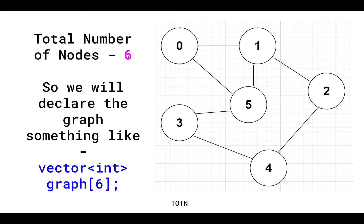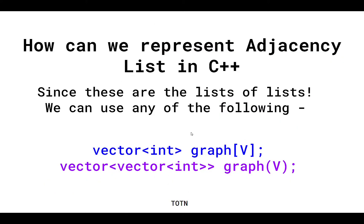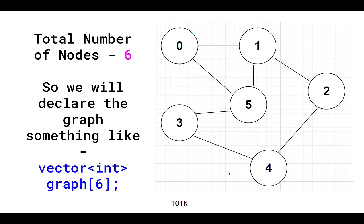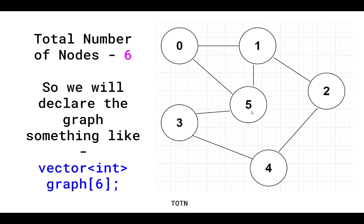Since the total number of nodes is 6, we declare the graph as vector<int> graph[6]. This creates indices graph[0], graph[1], graph[2], graph[3], graph[4], graph[5] — array indexing starts from 0, so we go from 0 to 5. Each of these entries will be a list of neighbors, initially empty.